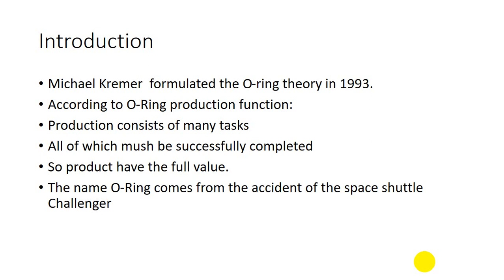So just because of one component the whole mission went wrong. Kramer suggests, based on this idea, a production function in which production consists of many tasks — either simultaneous or sequential — all of which must be successfully completed so that the product has full value. This is the basic idea of the O-ring model: the theory draws from the Space Shuttle Challenger mission and uses it as a metaphor.